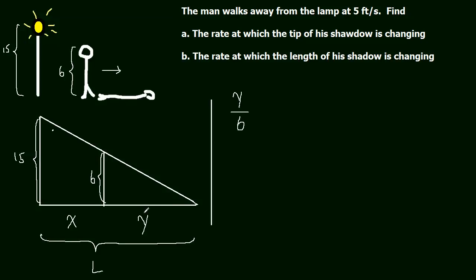So the smaller triangle side divided by its height is equal to the larger triangle side which is x plus y, that's the whole side, divided by its height. And this is going to be equal to, once we cross multiply, 15y will equal 6x plus 6y.